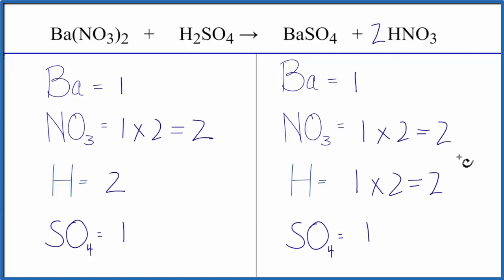This equation is balanced. So you can see the utility of counting the nitrates as one thing if they appear on both sides, or the sulfates as well. This is Dr. B with the balanced equation for barium nitrate plus sulfuric acid. Thanks for watching.